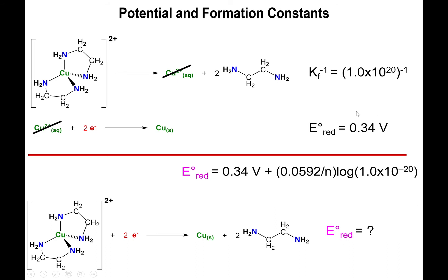Specifically, we can add the 0.34 volts of the reduction that we have here, with not the 1×10^-20 value, but rather the 0.0592 divided by n times the log of 10^-20. And in terms of the value of n is literally what you see right here for the reduction, it's a 2.